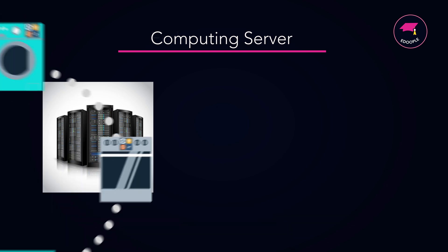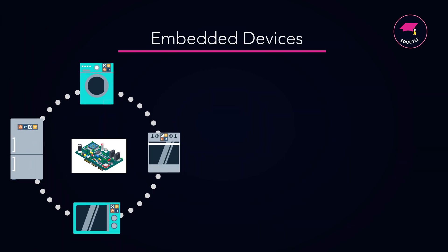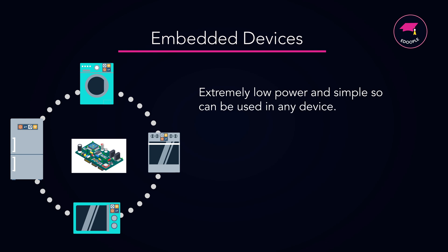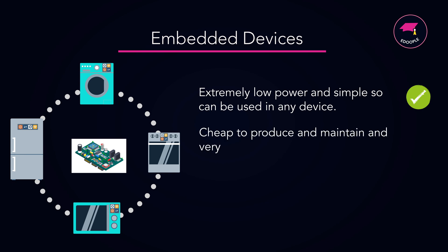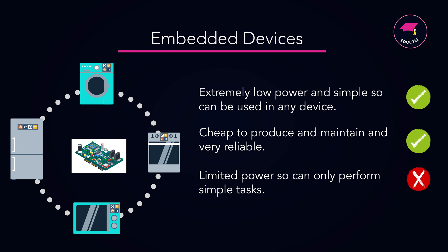The next one might have split your mind: embedded devices. These are everywhere. They're very low power, so they can be used in any device — washing machines, dishwashers, and microwaves all have them. They're cheap to produce and maintain and extremely reliable. They are limited in power though, so they can only perform simple tasks, and they're very difficult to upgrade — so once you've put them in, they kind of have to stay as they are.